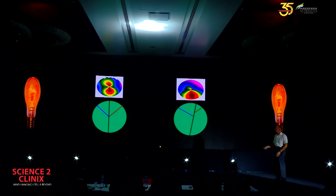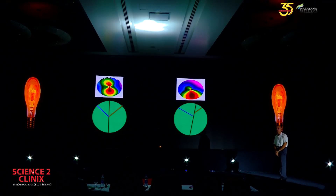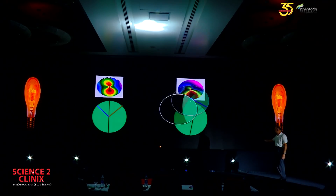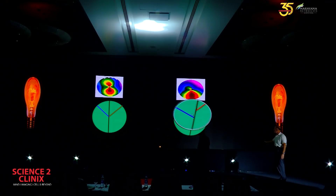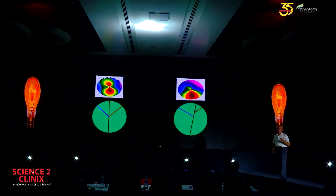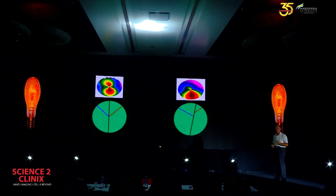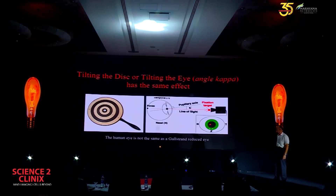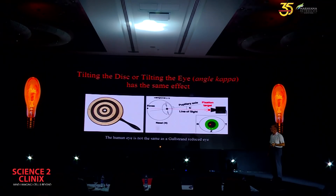Here's another example: the map on the left follows Gullstrand's reduced eye, zero degrees angle kappa. This is why we get inferior steepening on the right. When we do axial curvature — and the same applies to tangential curvature — we get a shorter radius of curvature in that area even though the shape is identical. Whether we tilt the Placido disc or tilt the eye via angle kappa, the effect is the same: a perceived change in curvature that does not reflect a change in shape.